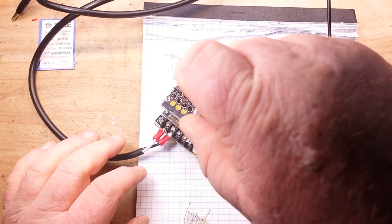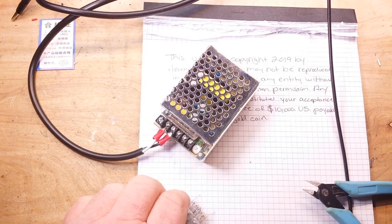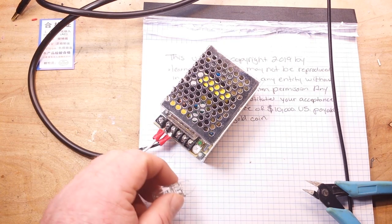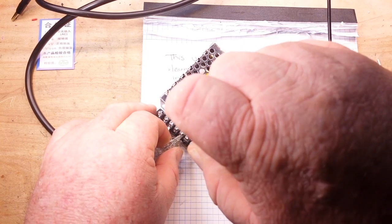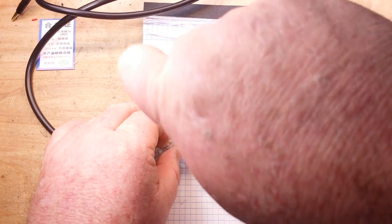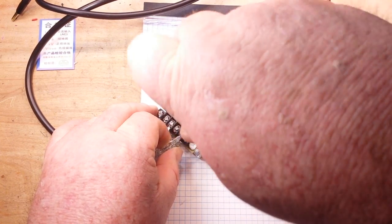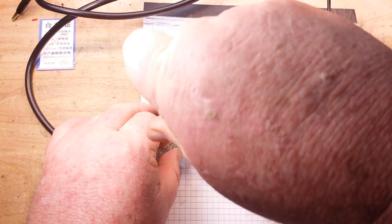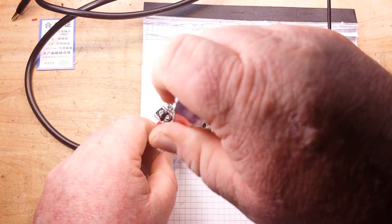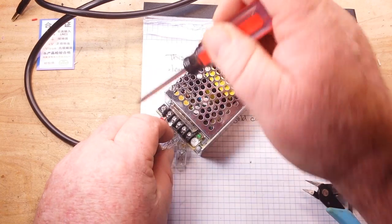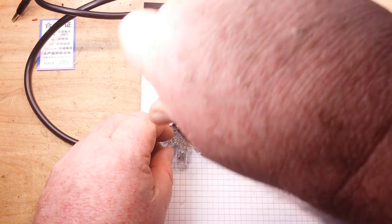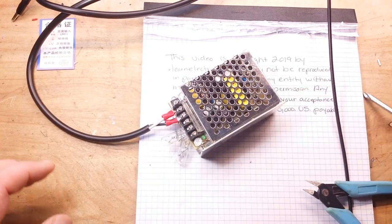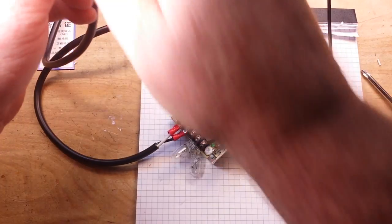All right, next we'll take another look at it with a load on it. And what I've got for a load are a couple of 12 volt car bulbs that I've series together, so they should be okay on 24 volts. All right, let's plug her in. Okay, there we go.